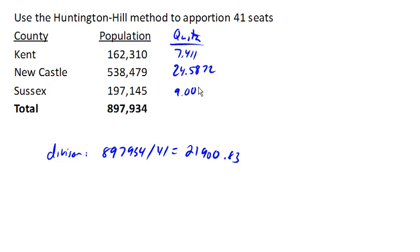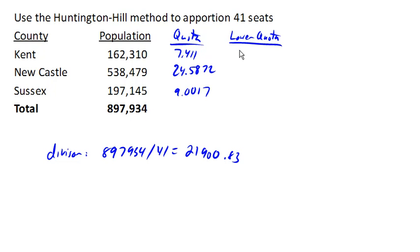Now is where things become a little more interesting. The first thing we're going to do is find what's called the lower quota. That's really easy — we just chop each of these down to the next decimal down, rounding down or chopping off the decimal. Kind of like how we started with Hamilton's method.